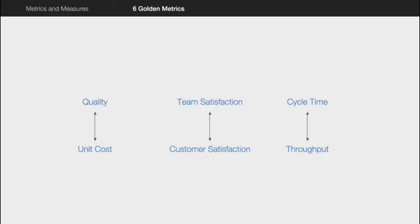The six golden metrics that I always recommend to an operations team are: a quality metric depending on what you're delivering, customer satisfaction, throughput, unit cost, cycle time, and team satisfaction.